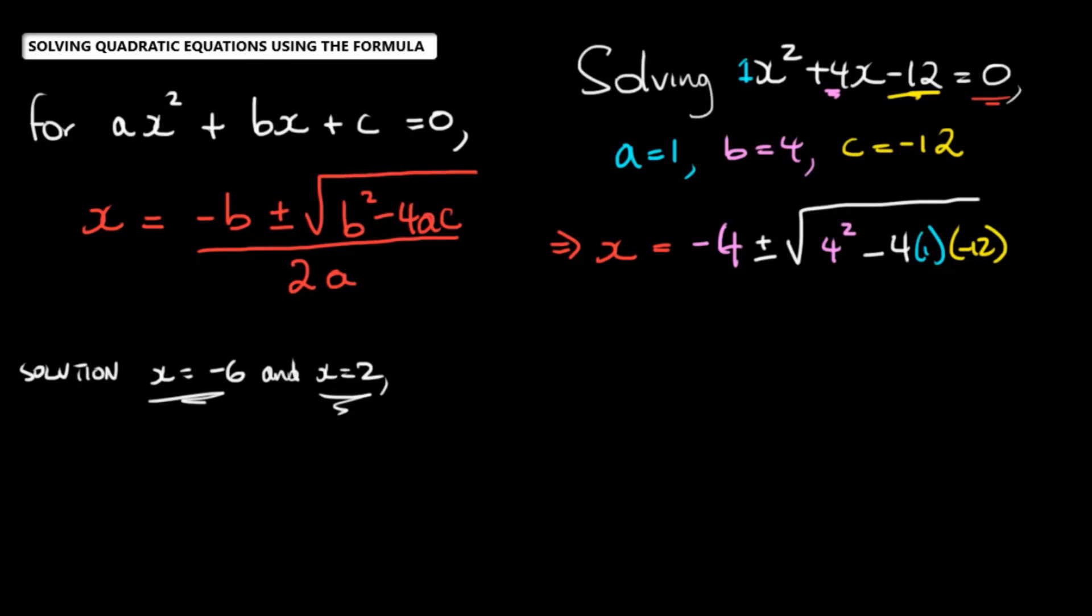And then we're going to put all of that over two times A. So that's going to be two times one. So once you substitute that, all we need to do now is to simplify and solve.